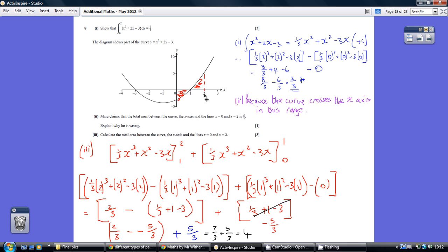To work out the area between 2 and 1, we substitute 2 and subtract the result when substituting 1. As shown here, this gives us this minus this.